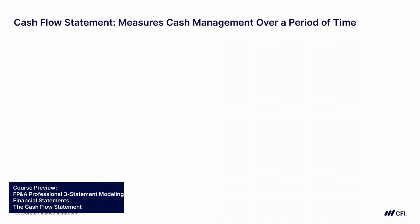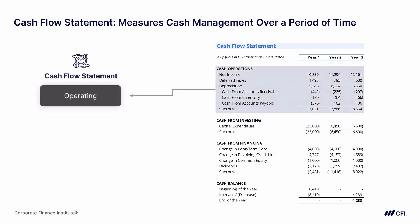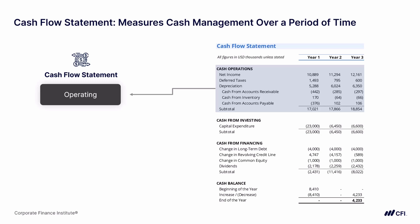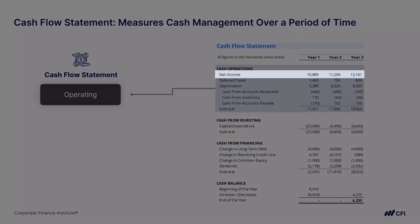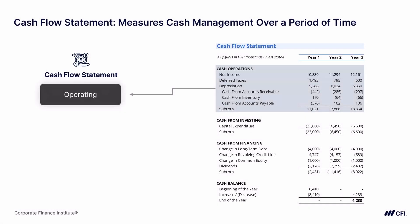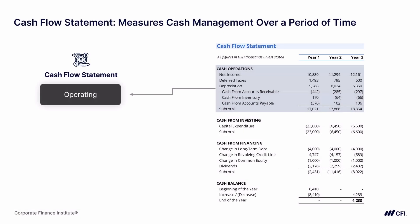The cash flow statement measures cash management over a period of time. It is typically broken up into three sections. The first is the operating section, showing cash from the company's operations. This section starts with net income, which was accrued on the income statement. What we want here is a reflection of cash from operations, so we're adding back non-cash items like deferred taxes and depreciation — unwinding the accrual process to get a measurement of the company's cash from operations.